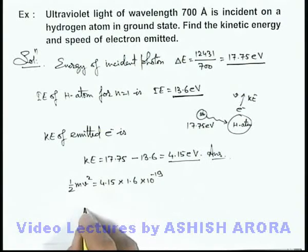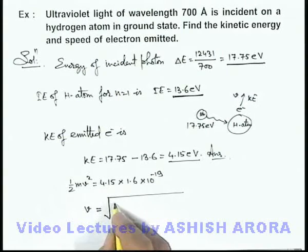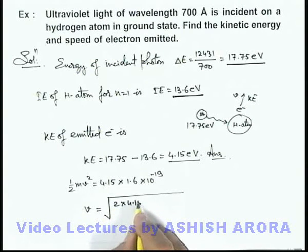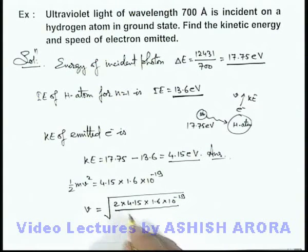And here, the speed of electron finally we are getting is root of 2 × 4.15 × 1.6 × 10⁻¹⁹ divided by the mass of electron, which is 9.1 × 10⁻³¹.